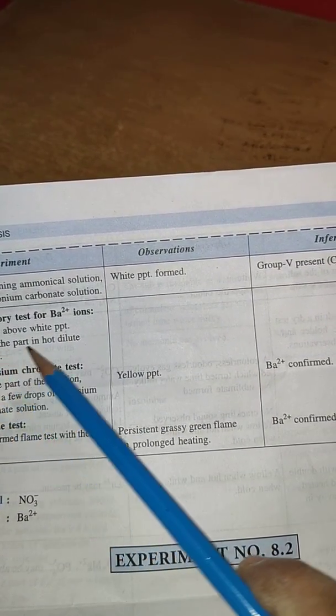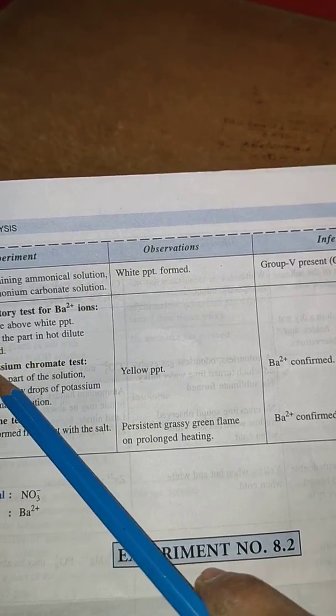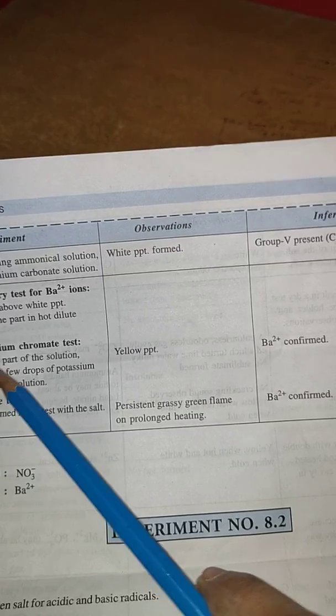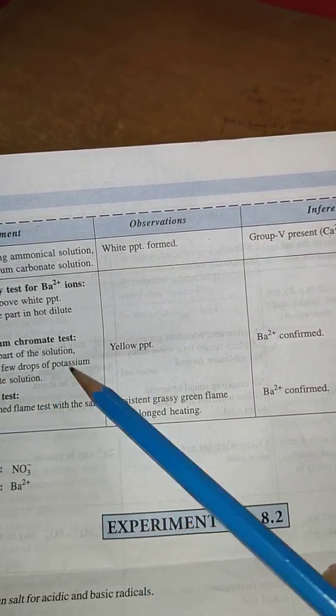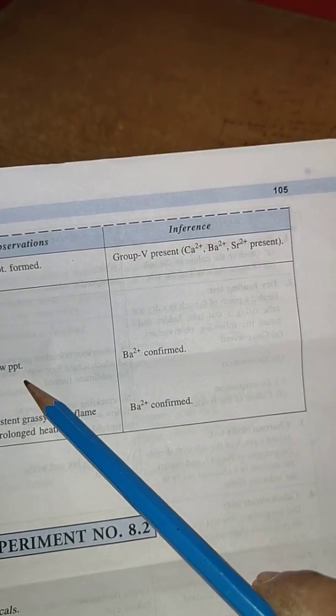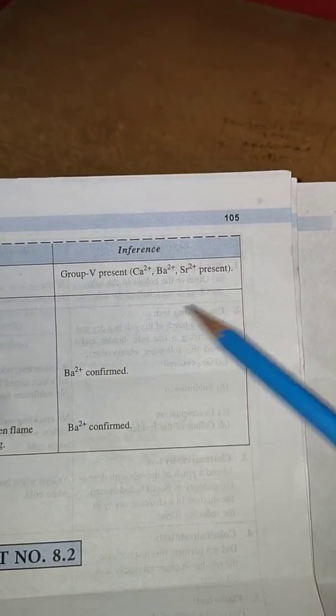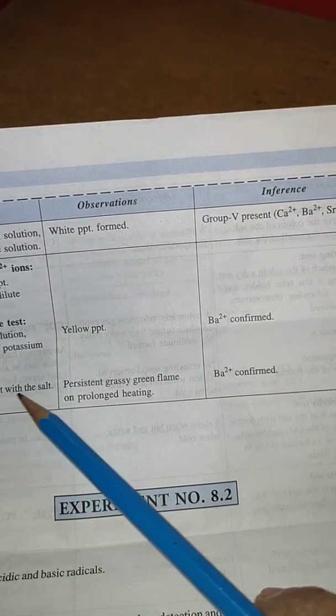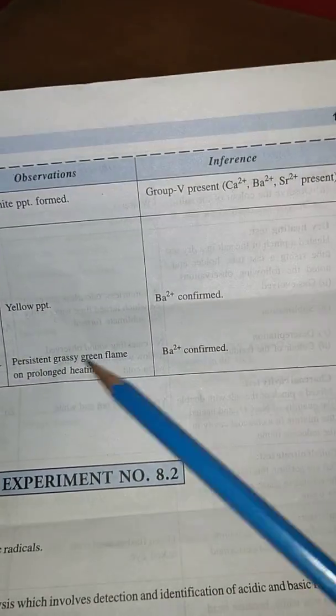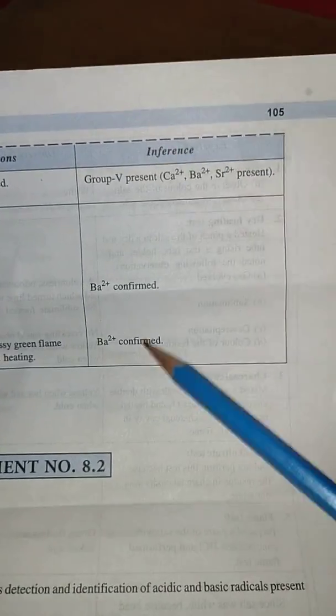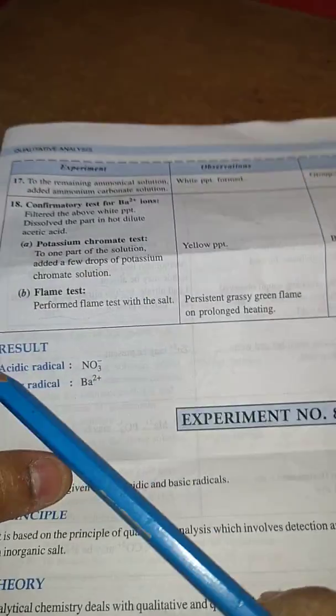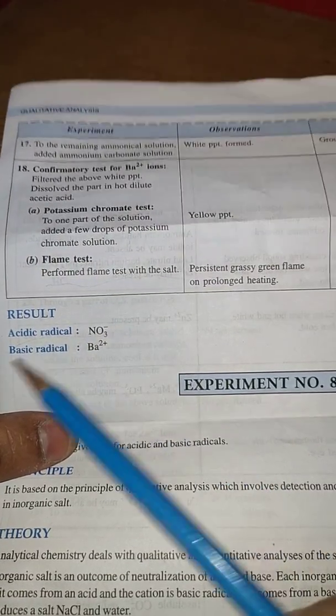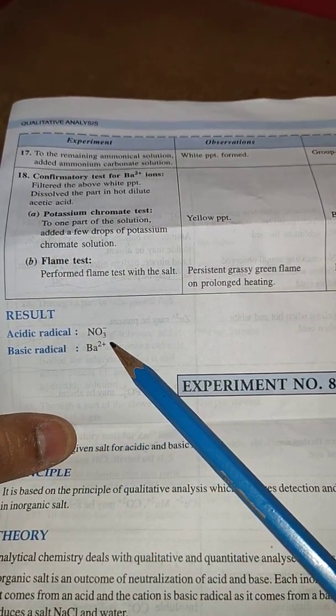To one part of the solution add a few drops of potassium chromate solution. Yellow precipitate confirms Ba²⁺. Next is flame test: perform the flame test with the white salt. Persistent greasy green flame on prolonged heating, so Ba²⁺ confirmed. So your result is: acidic radical is NO3⁻ and basic radical is Ba²⁺.